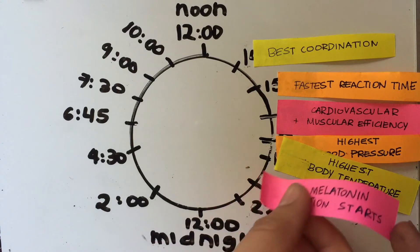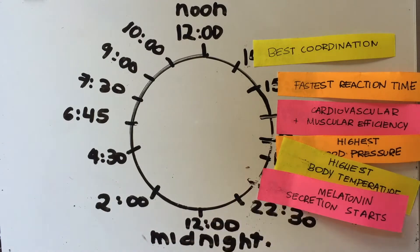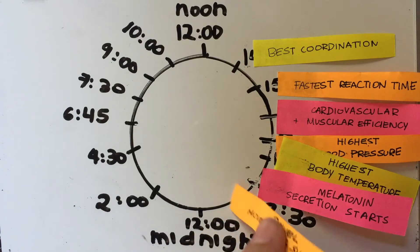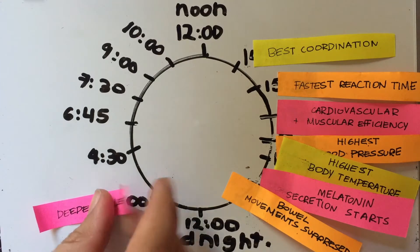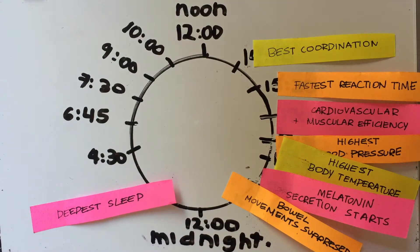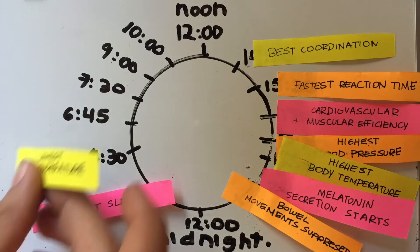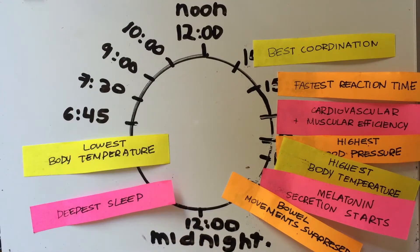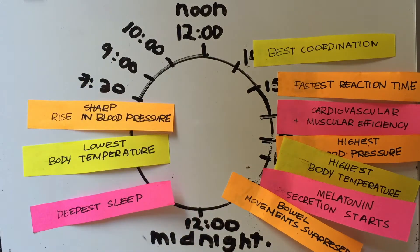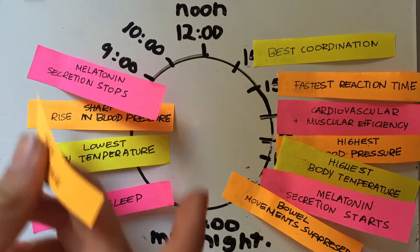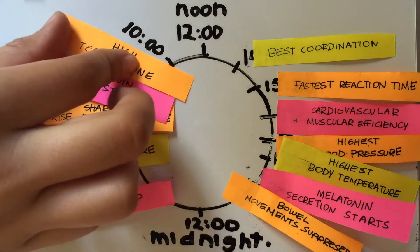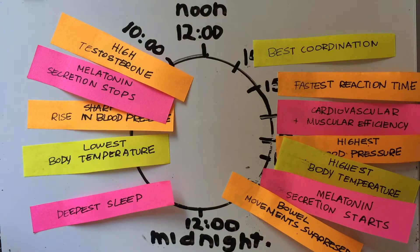Melatonin secretion starts at 9. Bowel movements are suppressed at 10:30. Deepest sleep at 10. Lowest body temperature at 4:30. Sharpest rising blood pressure at 6:45. At 7:30, melatonin secretion stops. At 9 is the highest testosterone secretion, and at 10 we have very high alertness.